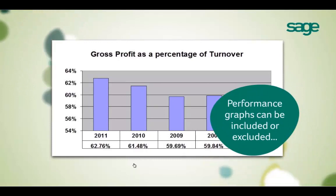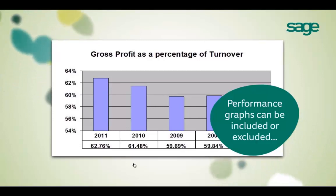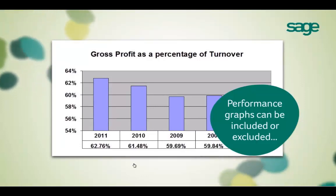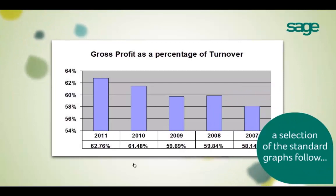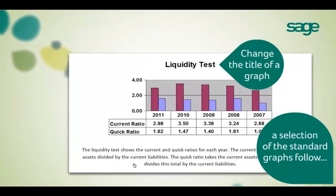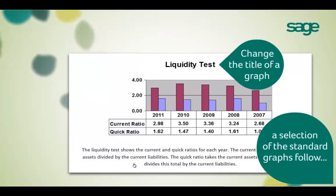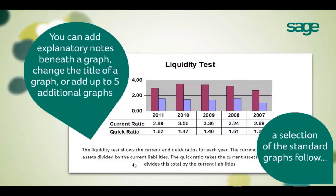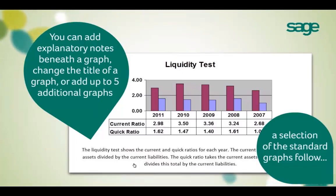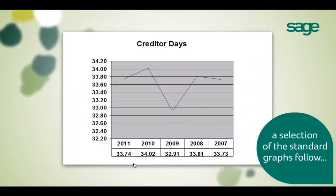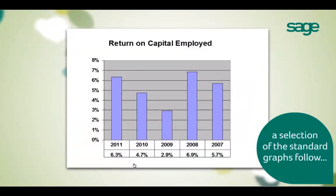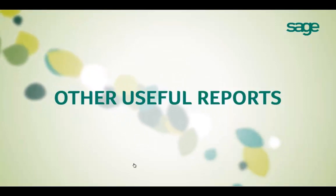You can select whether or not to include the graphs in the MIP report. Here's just a selection of the tables that can automatically be populated within the report. It's easy to change graph titles and add explanatory notes. You also have the ability to set up five additional graphs of your choosing. For most people, seeing a graphical representation of something like changes in creditor days makes it much easier to spot something unusual. Something that might not normally be analysed, like return on capital employed, is included as a standard graph.